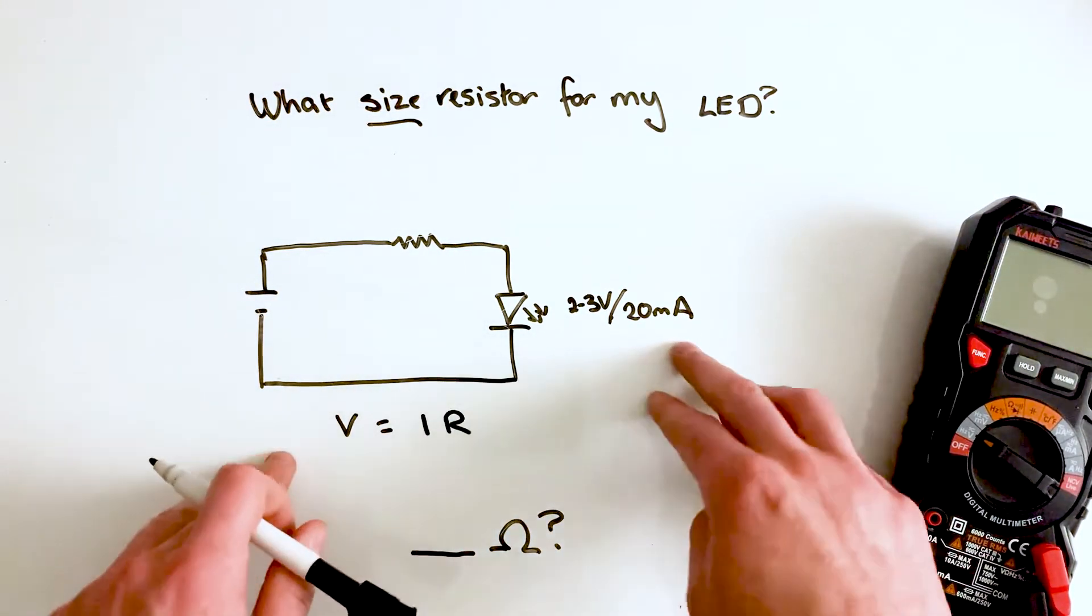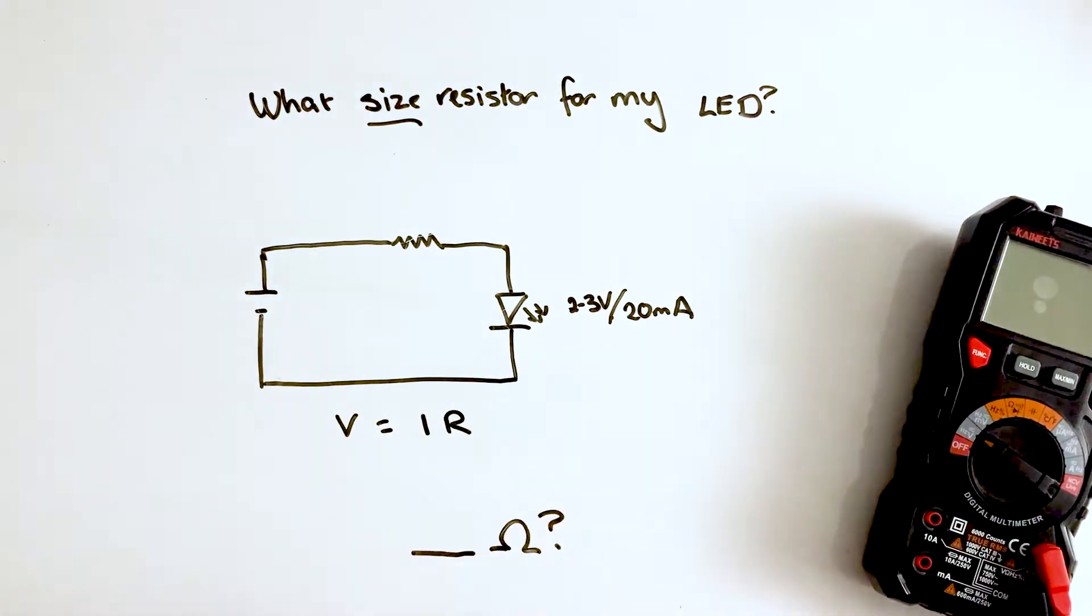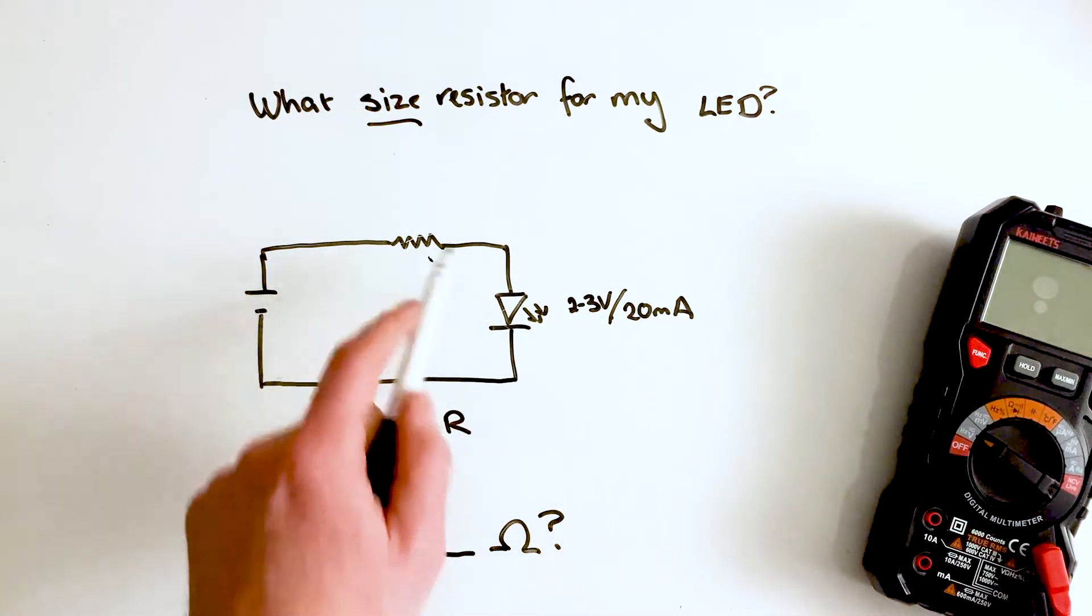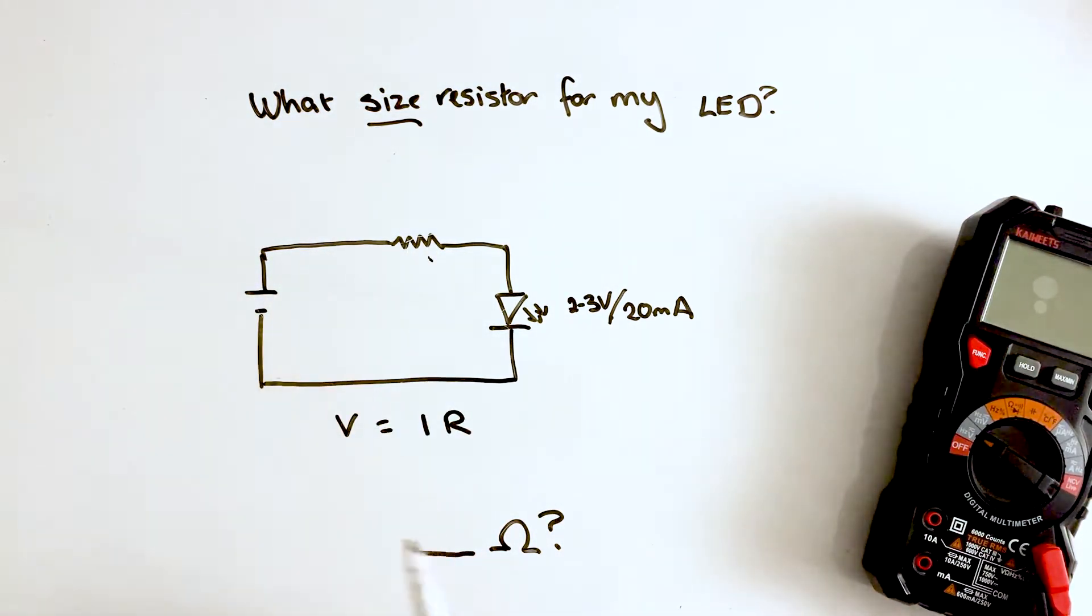Working with that, you need to understand this concept of what Ohm's law is, and that will help you understand what size resistor we're going to need to put into our circuit so we don't blow out our LEDs every single time.